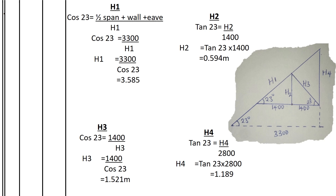Moving to H2, the length of the tie. With a 23-degree pitch and 1400mm as the adjacent, we use opposite over adjacent. So tan 23° equals H2 over 1400, giving H2 equal to 0.594 meters.